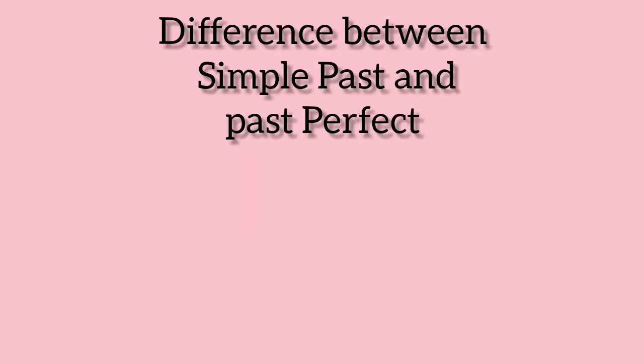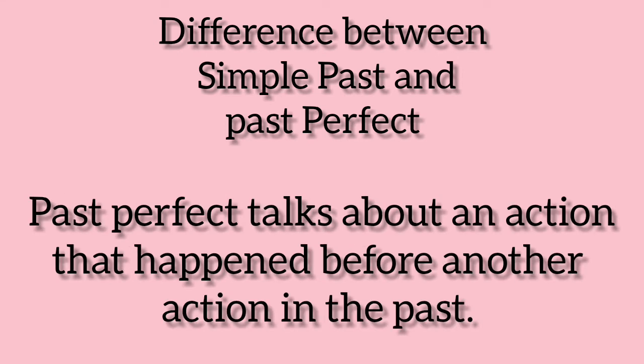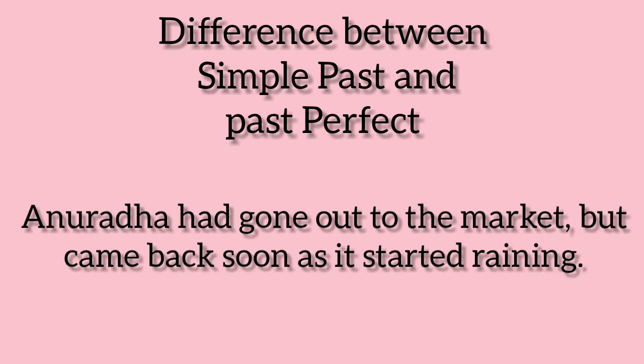The difference between simple past and past perfect is that simple past is used to talk about something that happened in the past, while in past perfect, one action happens before another action. For example, 'Anuradha went out to the market' is simple past. But 'Anuradha had gone out to the market but came back soon as it started raining' is past perfect, where going out to the market happened before the raining started.